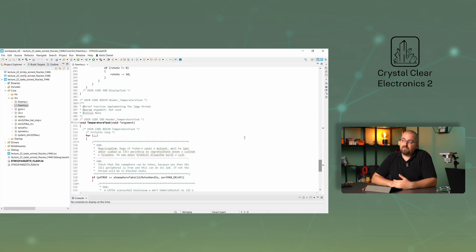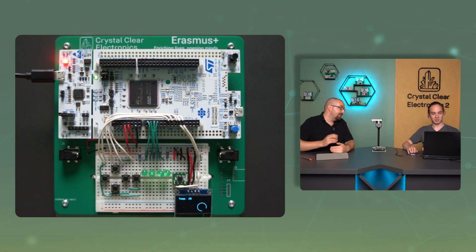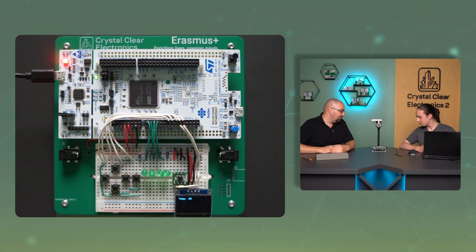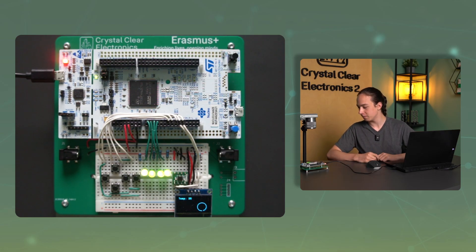Now let's modify the vTaskDelay function in the temperature task to HAL_Delay and set the parameter to 3000, which means 3 seconds. The circle has started to form, but when the temperature is displayed, the LEDs stop running. This is because HAL_Delay is not an OS-level but a processor-level wait — it does not cause the given task to give up running, meaning other lower priority tasks do not get processor time. Since the blinky task has lower priority, it will not run during these 3 seconds. So, it is better to implement waiting in tasks with the vTaskDelay function.